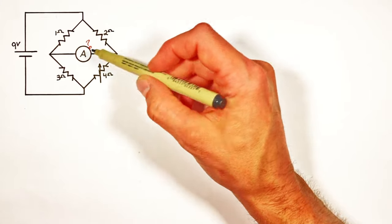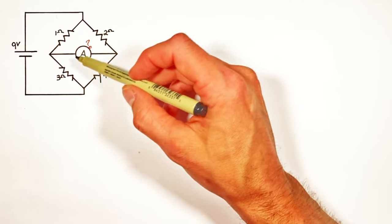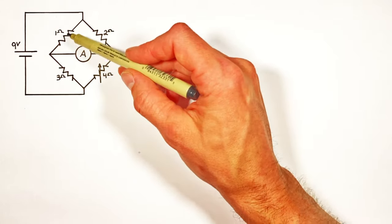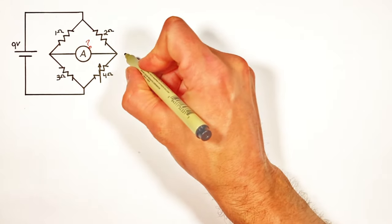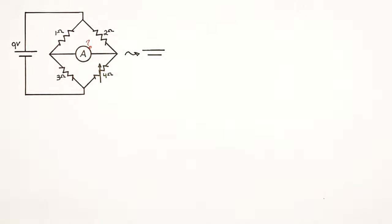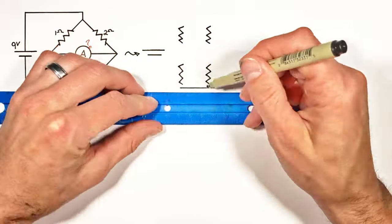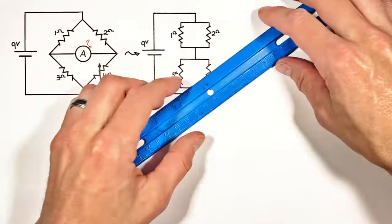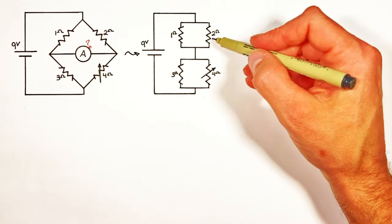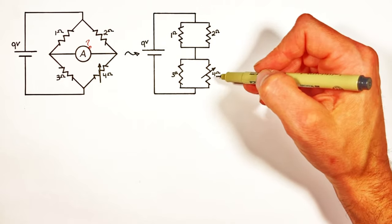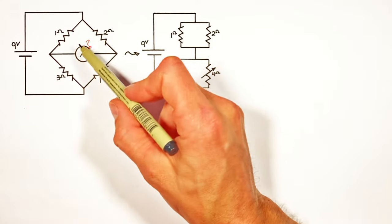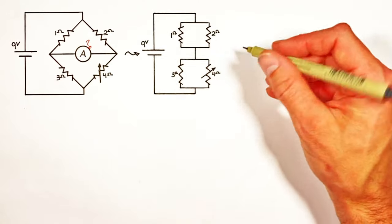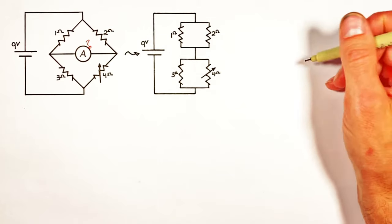The ammeter has no resistance — it's effectively just a wire or a short — so we can actually redraw the circuit as two sets of resistors which are in parallel with one another. You'll notice I left out the ammeter because it isn't playing a role as we reduce the circuit down to an equivalent resistance.